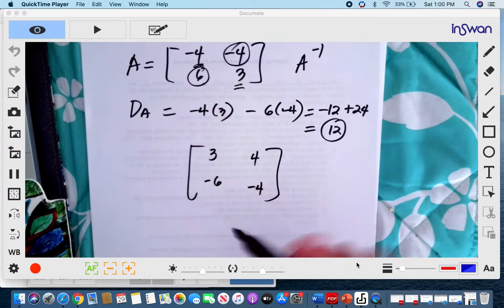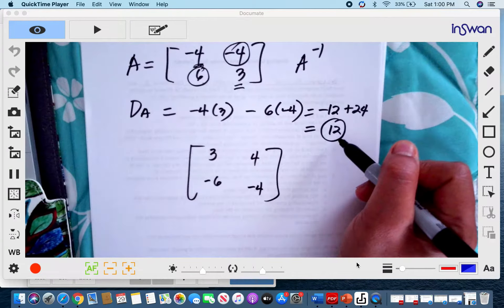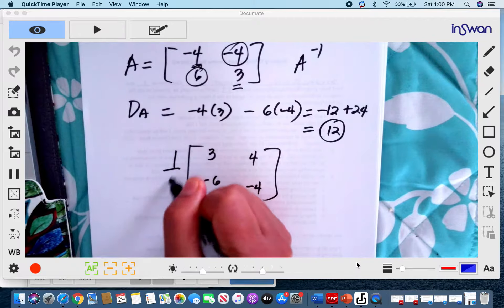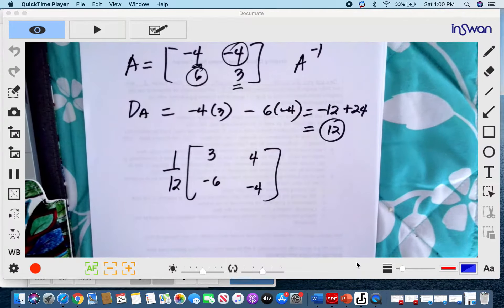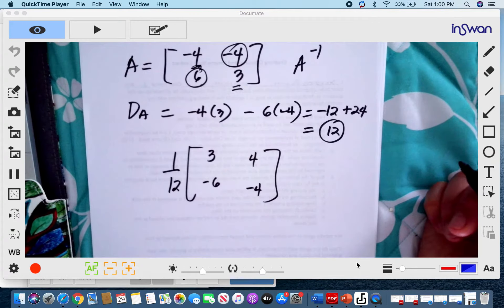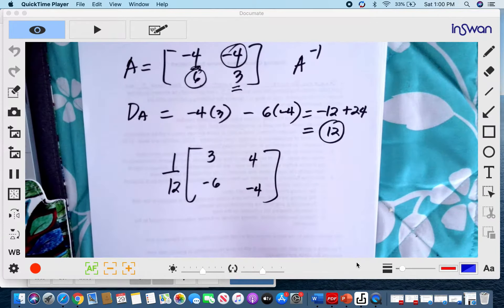The next step is to multiply this by the reciprocal of our determinant. So this is now our scalar quantity, and the scalar quantity is to be multiplied to each element of the new matrix.